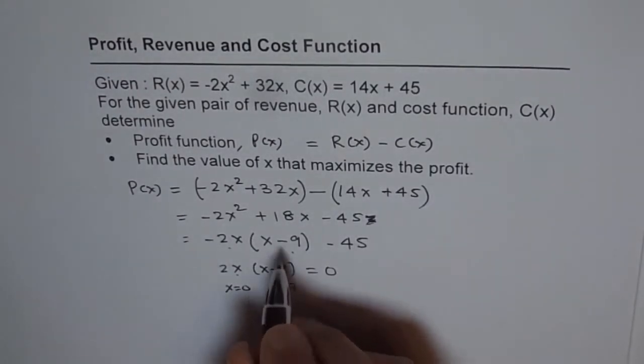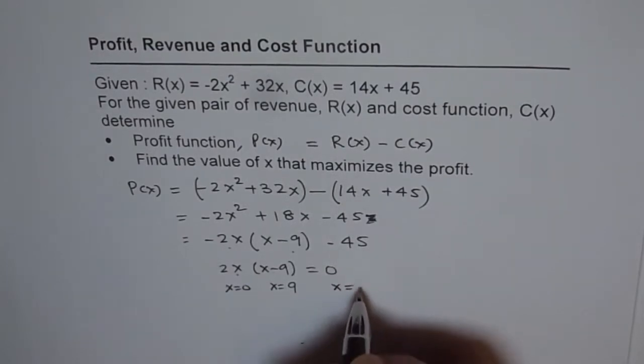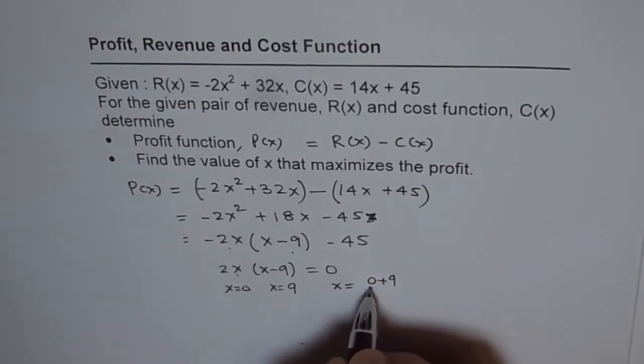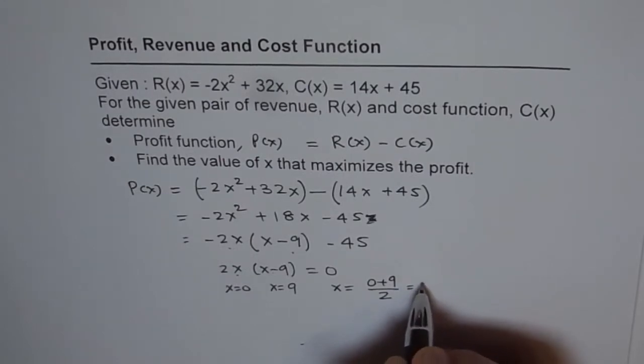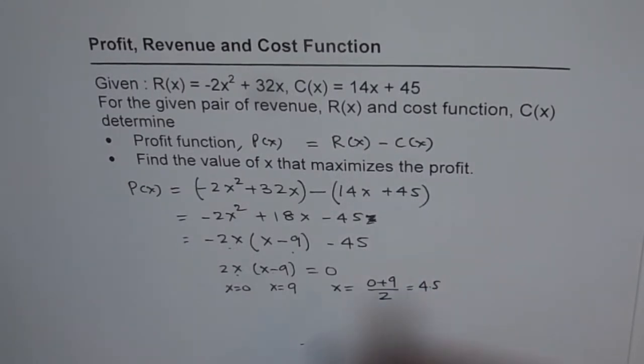So, therefore, axis of symmetry is going to be at x equals to (0 + 9)/2. So, we get 4.5. So, the profit function is maximum at 4.5.